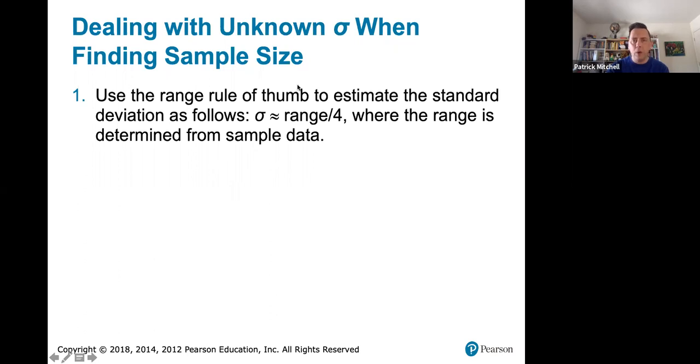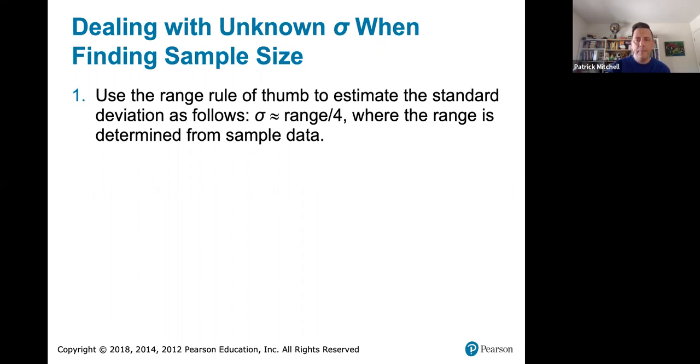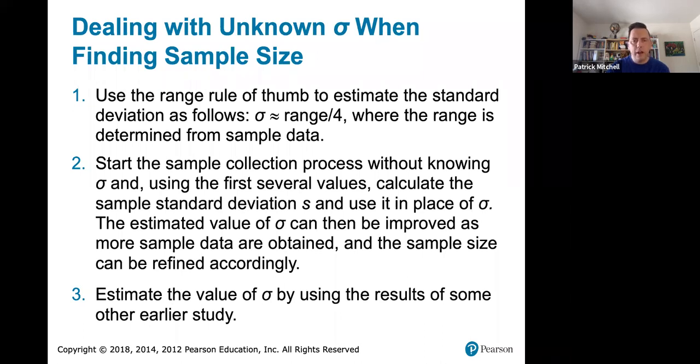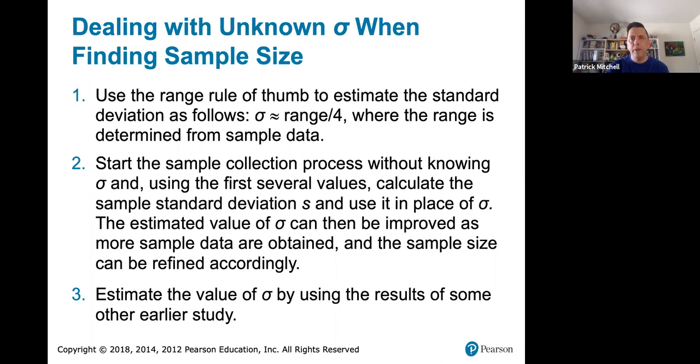Now if sigma is unknown, which is usually the case, there are a couple of things you can do. One thing is you can use the range rule of thumb to estimate the standard deviation. Remember that sigma is approximately the range divided by 4, and you would get the range from sample data. Or you can just collect a sample of any size, and using the first several values, calculate the sample standard deviation and use that instead of sigma. And another possibility is estimate the value of sigma by using the results of some other earlier studies. So you have several options for estimating sigma. Normally, you won't know it exactly.